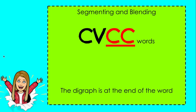Today's words, we're going to start with C-V-C-C words. They're going to start with a consonant. Then we'll have a short vowel sound followed by two consonants. This is our digraph. These two consonants make one new sound.